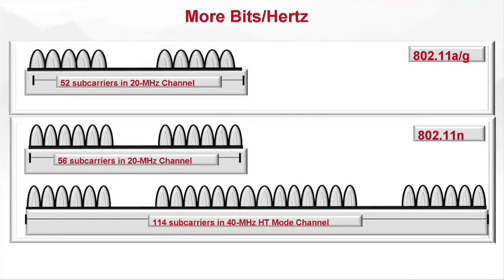The second thing it does is allow for better encoding — what's known as 64 QAM encoding. It allows for better encoding of bits per Hz. This is a subtle point, hard to explain without deep math, but the point is: for a given Hz — in other words, for a given amount of spectrum — this encoding scheme allows you to pack more and more bits in.